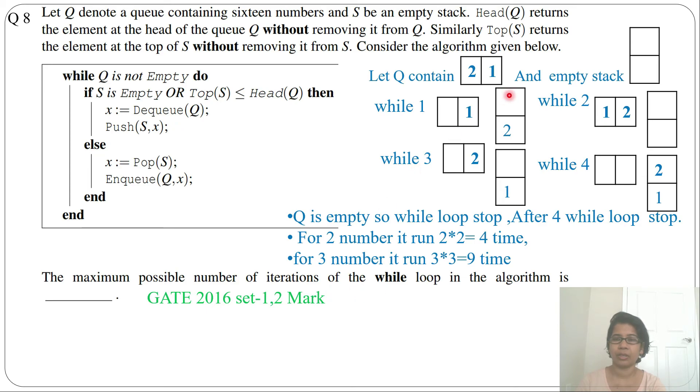But if it is in increasing order, it will take less. And it is asking maximum possible number of iterations, so that's why if it is in decreasing order, like I took 2, 1, then it is taking 4 times. If you will take 3, 2, 1, then it will take 9 times. If you will take 1, 2, 3, it will take less time. So for 3 it is 3 multiplied by 3, which is 9 times max.